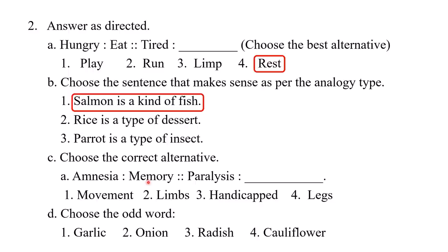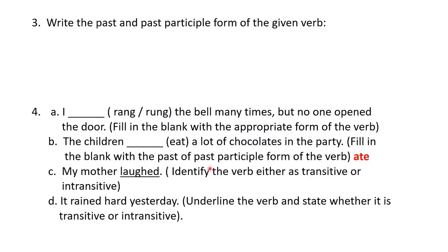C: 'Amnesia is to memory; paralysis is to what?' The answer is movement. D: Choose the odd word — garlic, onion, radish, cauliflower. These are all vegetables, but cauliflower is the odd one because garlic, onion, and radish all grow below the soil, while cauliflower is the only one that grows above the soil.